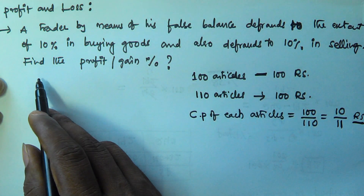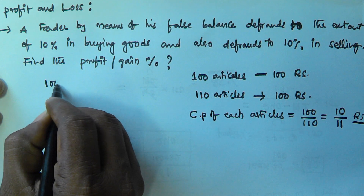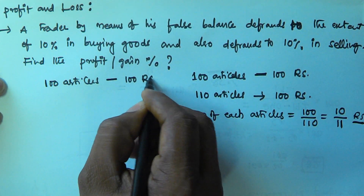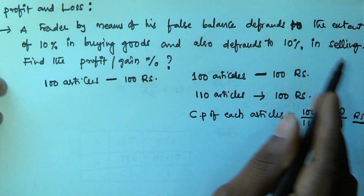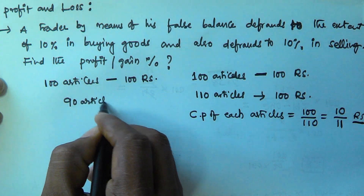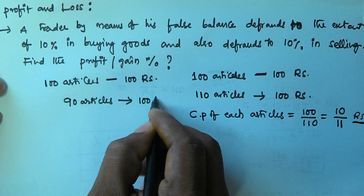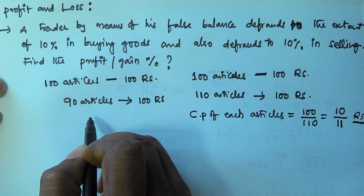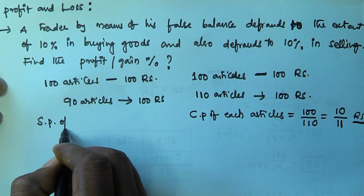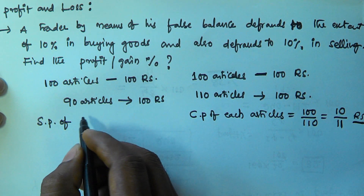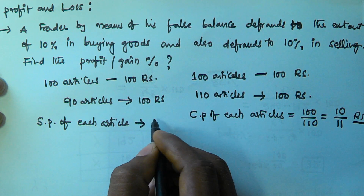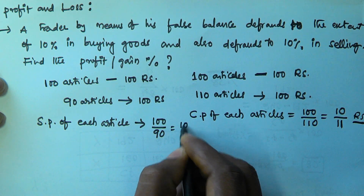He also defrauds 10% in selling. Let us assume 100 articles are to be sold for 100 rupees. But since he is defrauding 10% in selling, we subtract 10% — so he is actually selling only 90 articles for 100 rupees. Therefore the selling price of each article is 100 divided by 90, which equals 10/9 rupees.